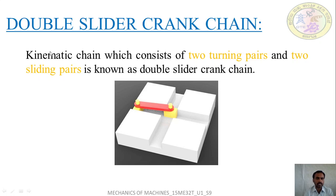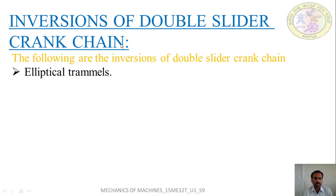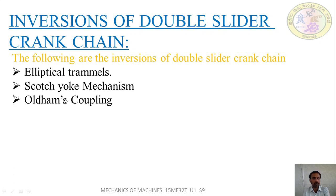The double slider crank chain is a kinematic chain or 4-bar chain which consists of 2 turning pairs and 2 sliding pairs. Since it has 2 sliders, it is called a double slider crank chain. Some of the inversions of the double slider crank chain are: elliptical trammel, Scotch yoke mechanism, and Oldham's coupling.